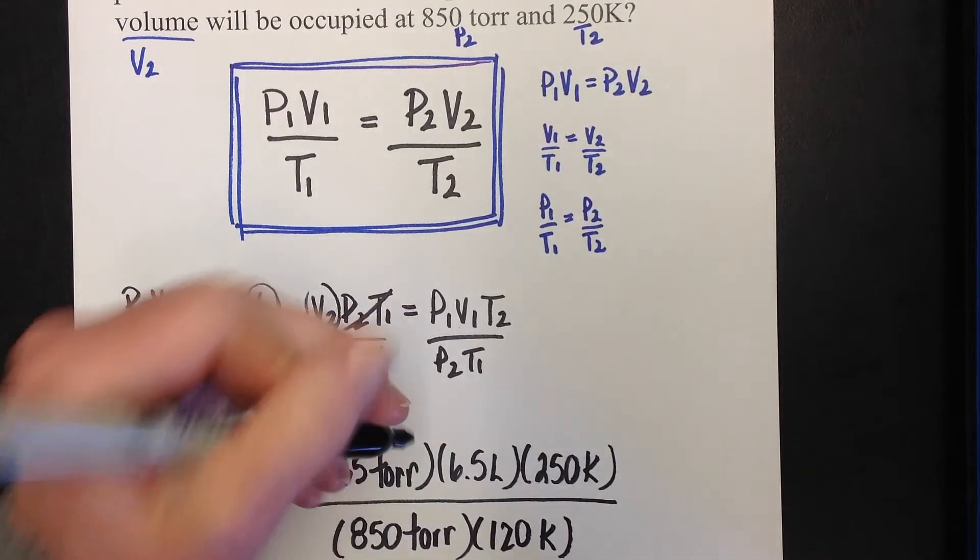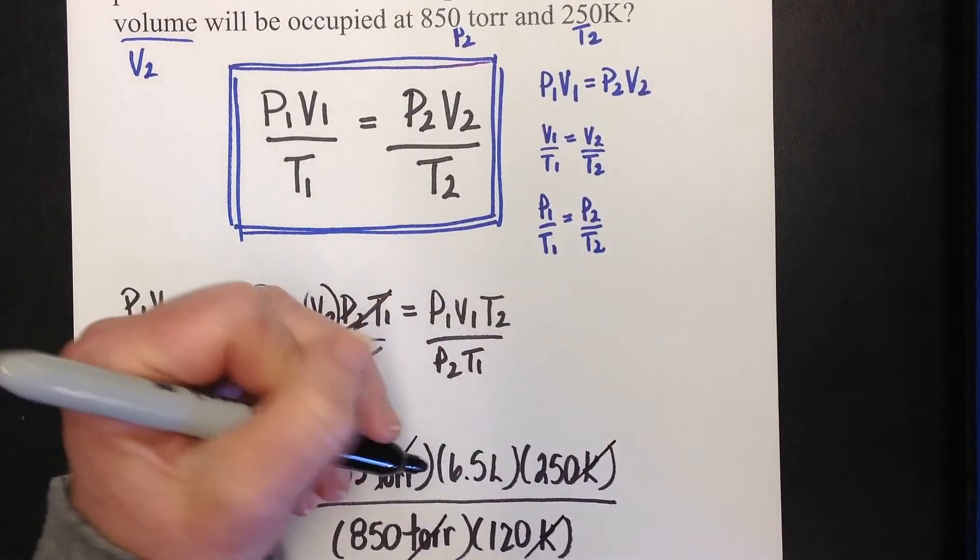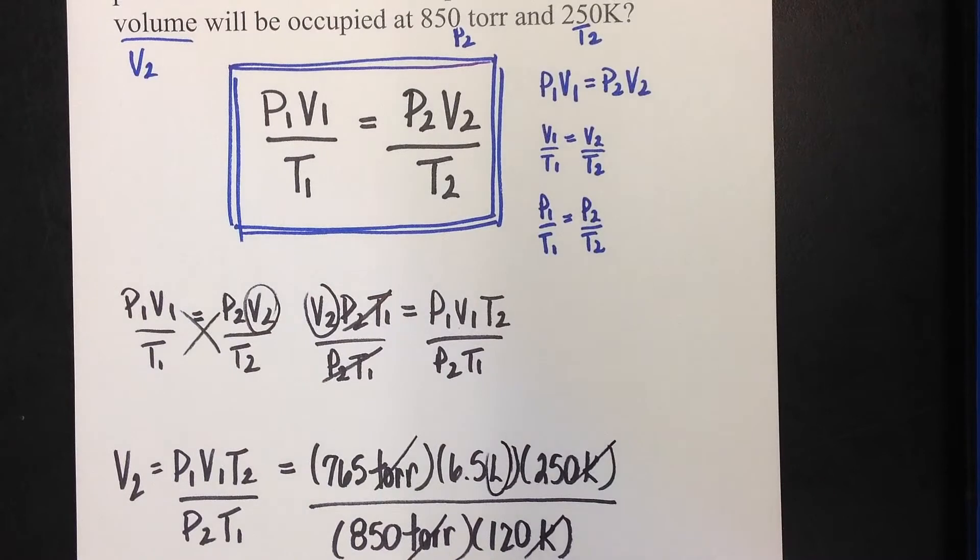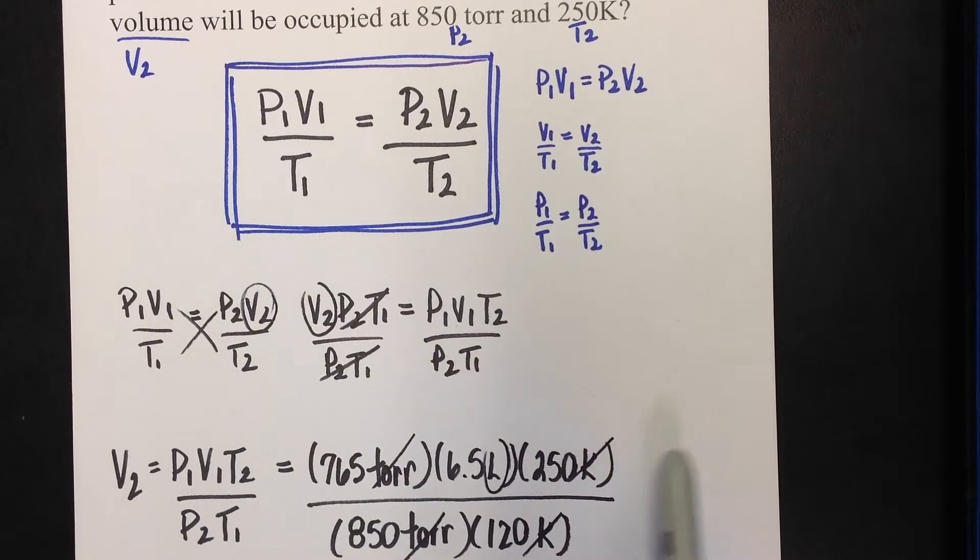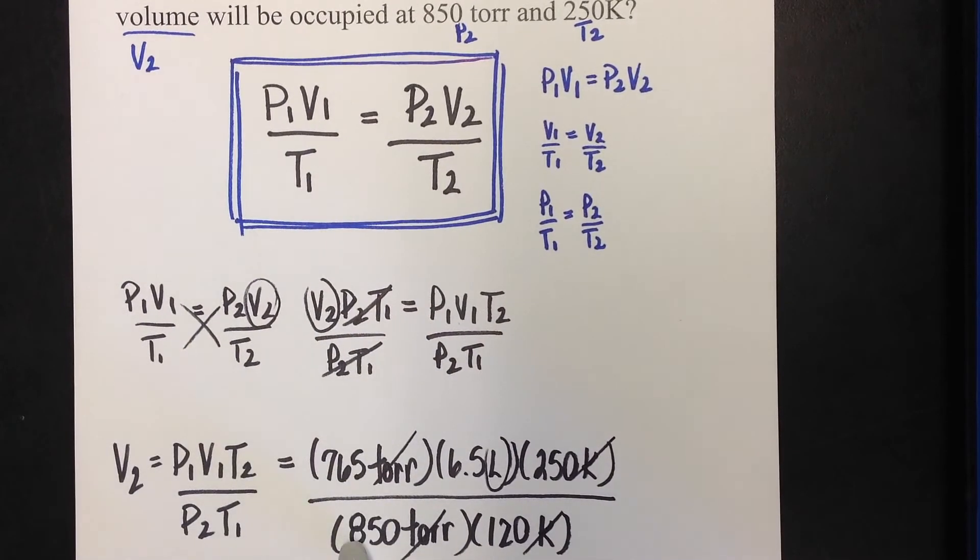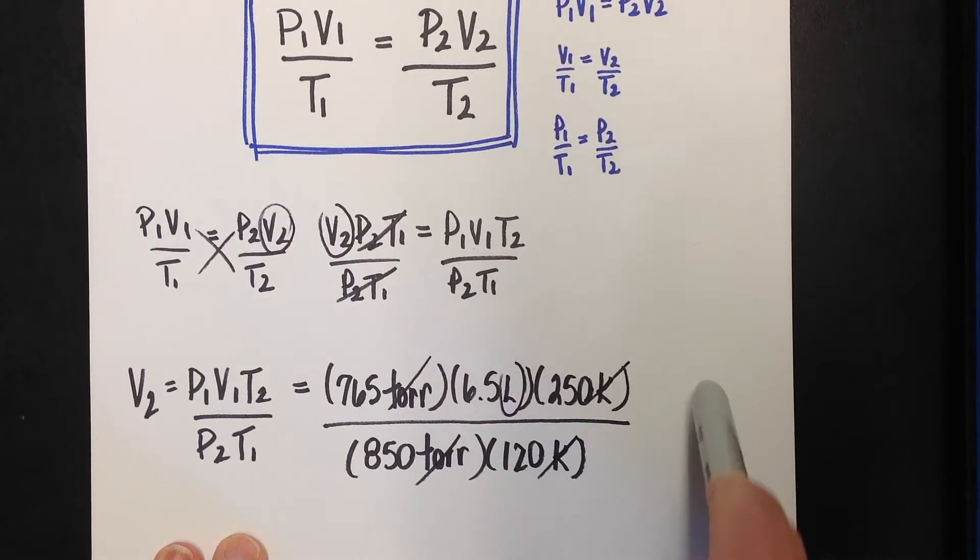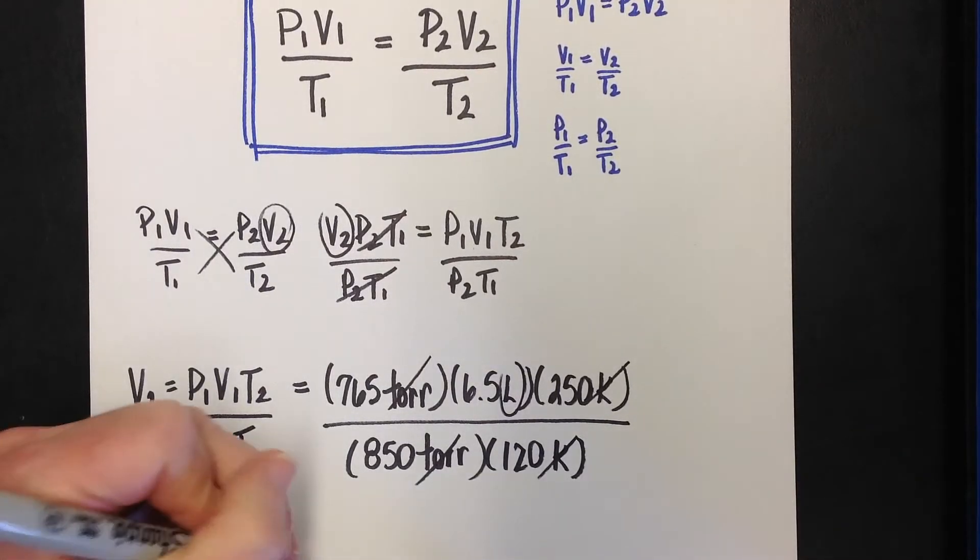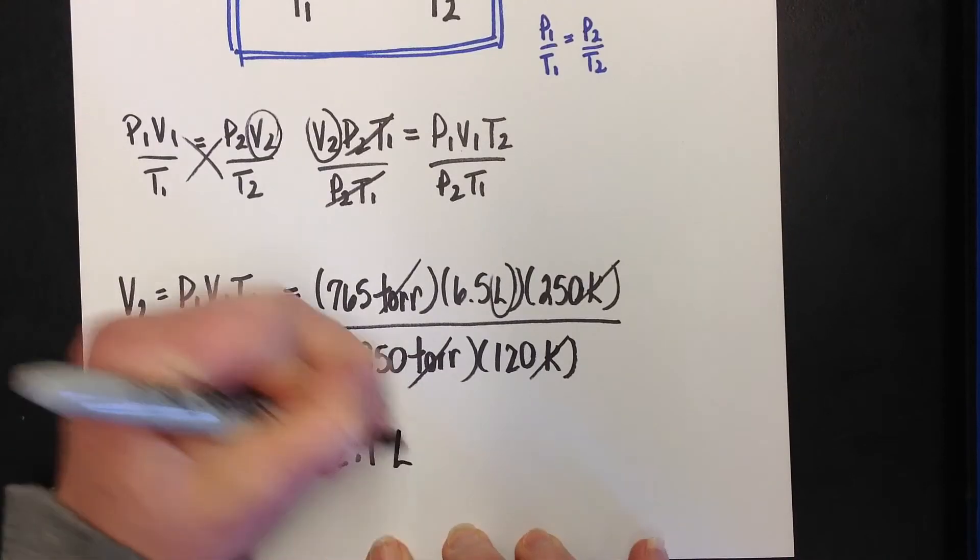Let's take a look at what we've got here. I can see torrs are going to cancel. I can see Kelvins are going to cancel. I'm left with liters. That's good because they asked me to solve for volume. So what we're going to do, be careful with your math here, multiply everything on the top, multiply everything on the bottom, and you're going to divide the top by the bottom, and your answer is going to be 12.1 liters.